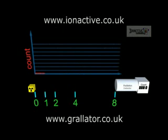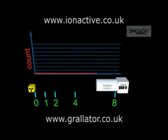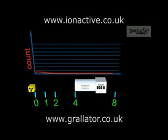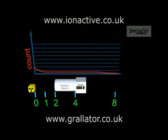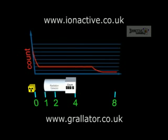To illustrate this, consider a detector 8 metres from a source. The detector count rate is one count per second. If I move the detector to a distance of 4 metres from the source, the count increases to 4 counts per second. Reducing the distance to 2 metres increases the count to 16 counts per second. Reducing the distance to 1 metre increases the count to 64 counts per second.